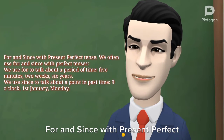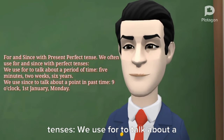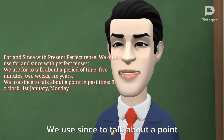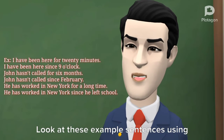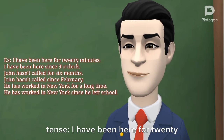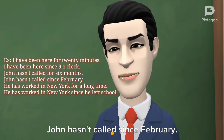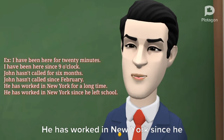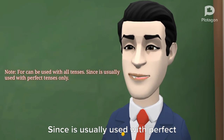For and since with Present Perfect tense. We often use for and since with perfect tenses. We use for to talk about a period of time: 5 minutes, 2 weeks, 6 years. We use since to talk about a point in past time: 9 o'clock, the 1st of January, Monday. For example: I have been here for 20 minutes. I have been here since 9 o'clock. John hasn't called for 6 months. John hasn't called since February. He has worked in New York for a long time. He has worked in New York since he left school. Note: for can be used with all tenses. Since is usually used with perfect tenses only.